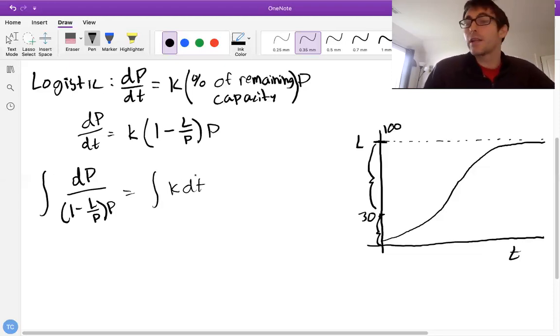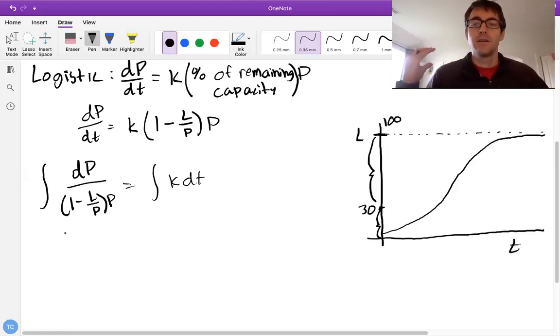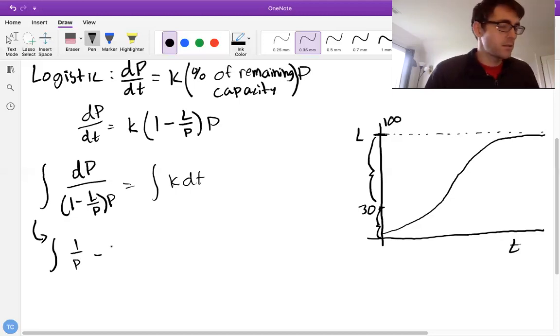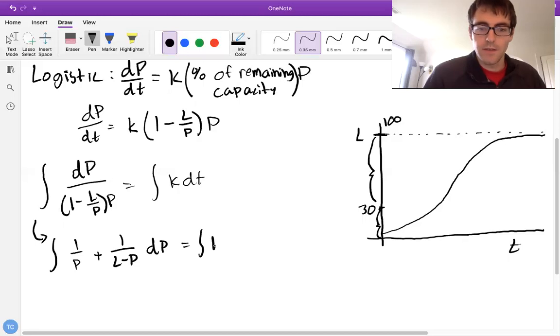So now we just want to integrate both sides. Integrating the right should be easy. Integrating the left actually gets a little bit messy. This is absolutely something that we can do. And the recommended alternate group discussion topic is actually going through this, but I'm just going to do the headlines. So the idea is that we can use partial fractions to rewrite this as the integral of 1 over P plus 1 over L minus P, DP equals the integral of K DT. So this was just some partial fractions steps. It was a little bit of algebra and then some partial fractions. Absolutely something that we know how to do. Not worth spending time talking about.